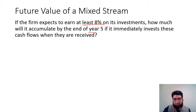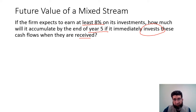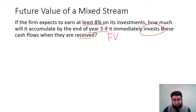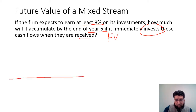If the firm expects to earn at least eight percent on its investment, how much will it accumulate by the end of year five if it immediately invests these cash flows when they are received? The small firm pays whatever cash flow at the end of the year, and SI immediately invests it at eight percent. We need the total accumulated amount — it's a future value problem, but since the cash flows are different, it is a mixed stream cash flow problem, which we solve by drawing a timeline first.